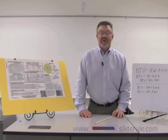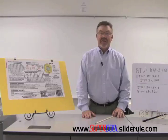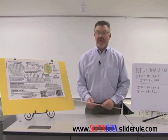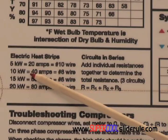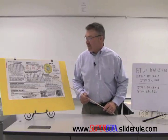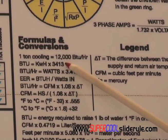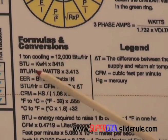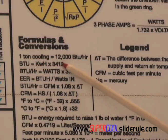This video is going to help you determine the BTU output of an electric heater. We're going to do two heaters. The first heater is going to be a 10KW electric heater. We come over to our formulas and conversions, go to the BTU output. We'll see that BTU equals KW times 3413.